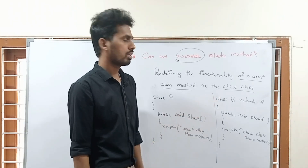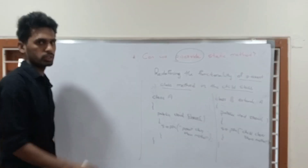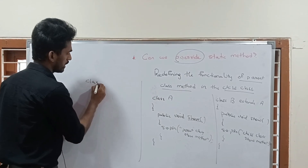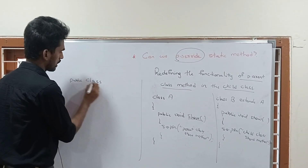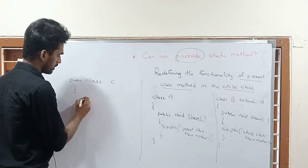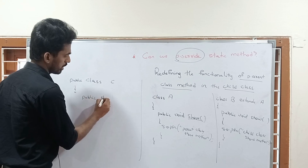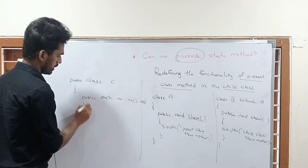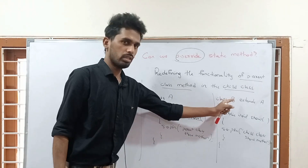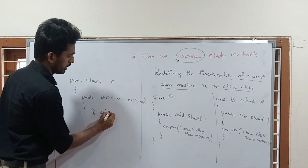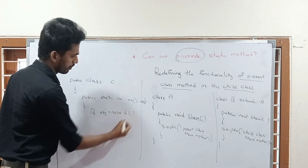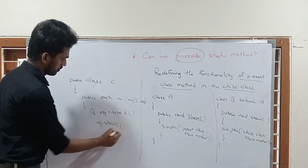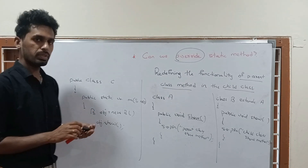That is nothing but method overriding. Now in order to execute this, let me take a different class - class C - with a main method: public static void main(String[] args). In this main method, I am going to create an object for the child class B: B obj = new B(). With the help of the child class object, I will call the show method: obj.show().